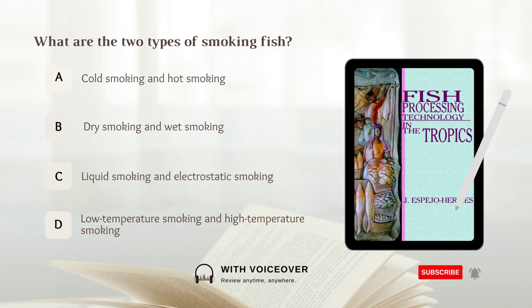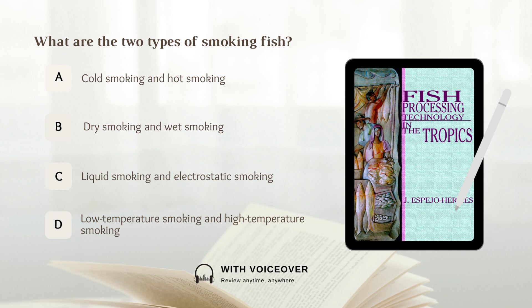What are the two types of smoking fish? A. Cold smoking and hot smoking. B. Dry smoking and wet smoking. C. Liquid smoking and electrostatic smoking. D. Low temperature smoking and high temperature smoking. Answer: A. Cold smoking and hot smoking.